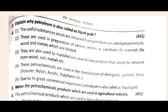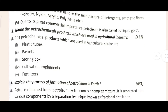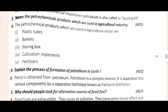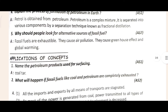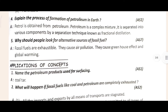If the video clarity is not good, go to the quality section and increase it. The third question asks to name the petrochemical products which are used in agriculture industry, like velocity tubes and similar items. The fourth and fifth questions are: explain the process of formation of petroleum in the earth, and why should people look for alternative sources of fossil fuels.